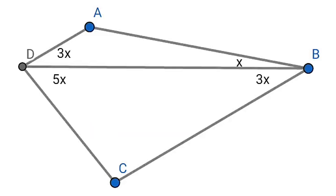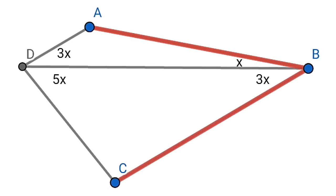Hi, welcome to this channel. In this video we will discuss a famous and interesting question. The question says that in quadrilateral ABCD, angle ABD is x, angle ADB is 3x, angle DBC is 3x, and angle BDC is 5x. One condition is also given: AB is equal to BC. What is the value of x? Try for a while and then see the solution — a purely geometrical solution.